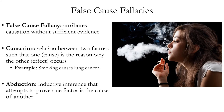The false cause fallacy is a general name for arguments that attribute causation without sufficient evidence. False cause is a highly generic fallacy term with several specific types. Causation is a relation between two factors such that one — the cause — is the reason why, or the explanation for, the other factor — the effect. Example: smoking causes lung cancer. When someone claims that, they're saying engaging in smoking is part of the explanation for why someone gets lung cancer. Abduction is a type of inductive reasoning that attempts to prove that one factor is the cause of another.